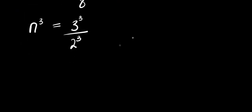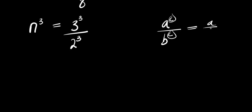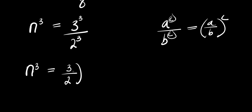From here, if you have a to the power c divided by b to the power c — where the exponents are the same — you can write it as (a divided by b) raised to the power of c. So we have n³ equals (3 divided by 2) raised to the power of 3.